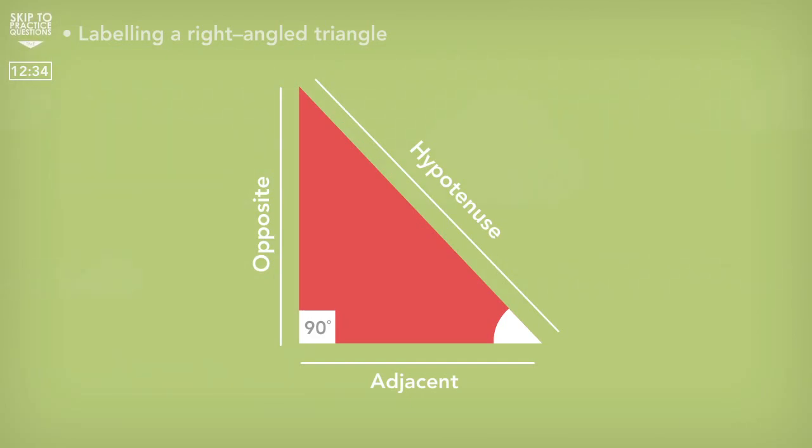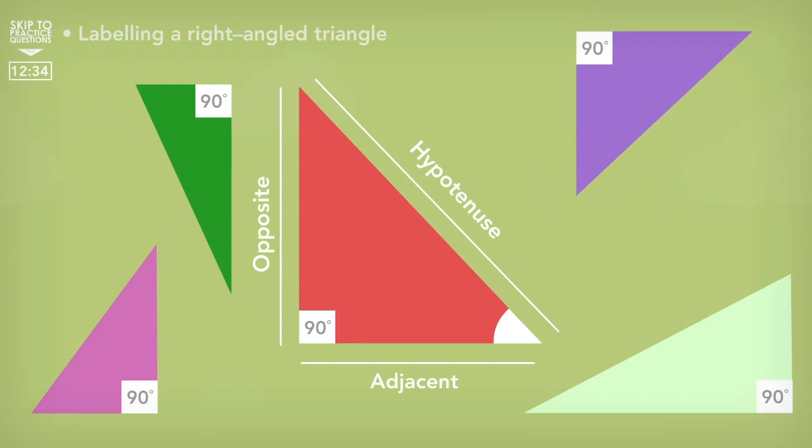So, look at these triangles. Using the indicated angles, pause the video for a second and see if you can identify the hypotenuse, adjacent and opposite sides of each triangle. Here are the answers.